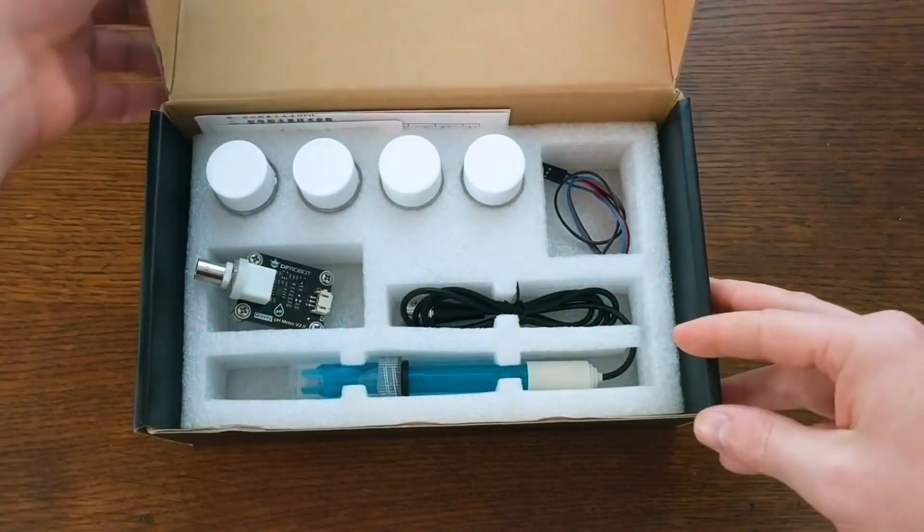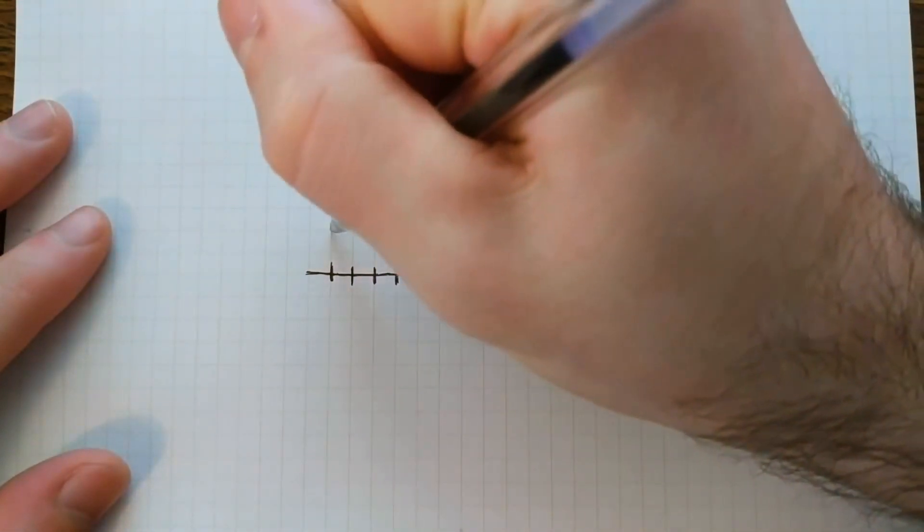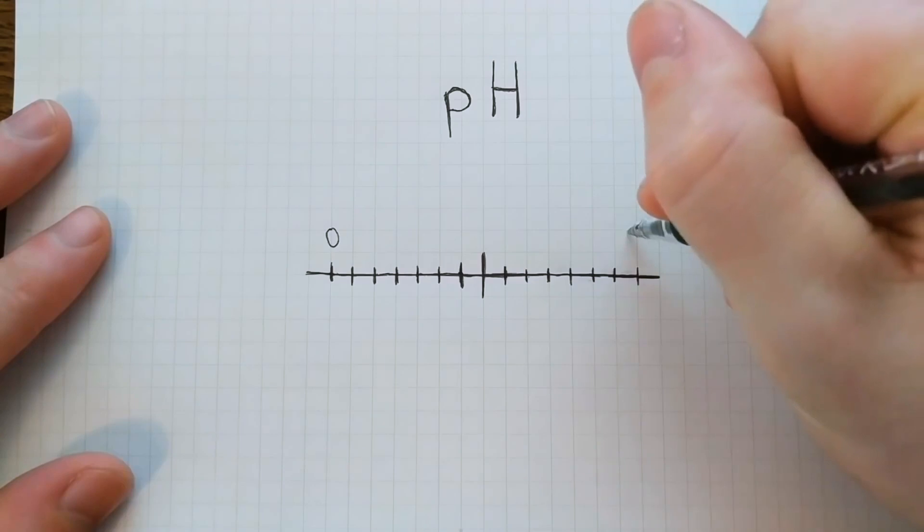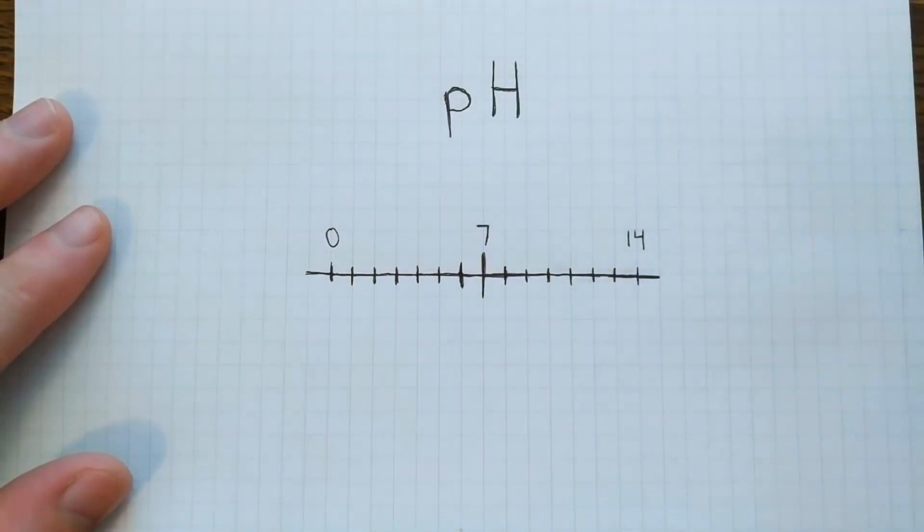But first, what exactly is it that we're measuring? pH represents the acidity or the alkalinity of a solution, and it does so on a scale of 0 to 14. A pH of 7 represents a neutral solution, and this would be something like pure water.